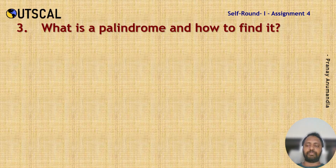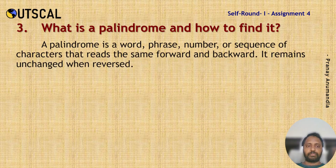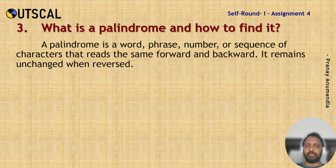What is a palindrome and how to find it in a programming language? A palindrome is a word, number, or alphanumeric value where, when you look at its initial position and then reverse it, it looks the same as before. That type of string or number is called a palindrome.